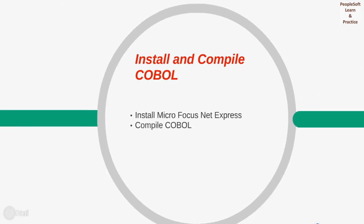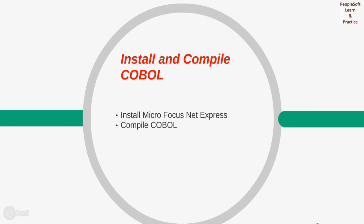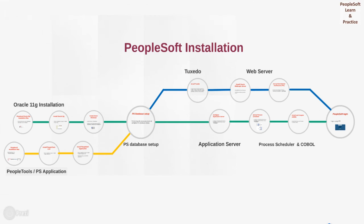The next step is to install and compile COBOL. COBOL is an optional installation; however, some of the processes in PeopleSoft are still written in COBOL, so we need to install COBOL as well. We need to first install Microsoft FOCUS Net Express and then install COBOL. This completes the PeopleSoft installation.